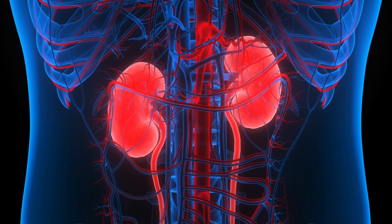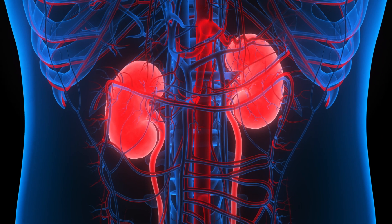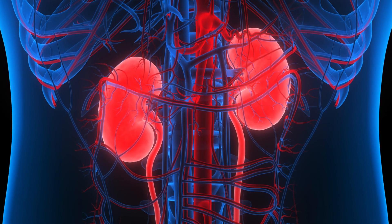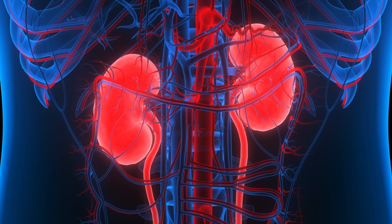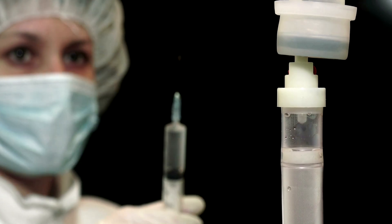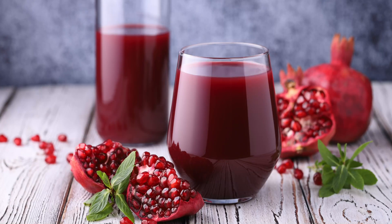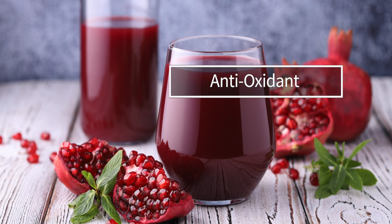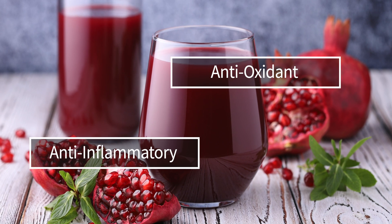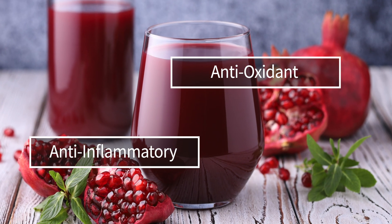Sixth, the kidney. Urolithin A appears to increase tubular cell survival and protect against acute kidney injury. Some chemotherapy agents can cause kidney injury or nephrotoxicity, and several animal studies have shown that administering urolithin A can decrease the amount of kidney damage these drugs cause, likely due to its strong antioxidant and anti-inflammatory properties.